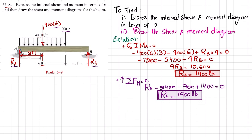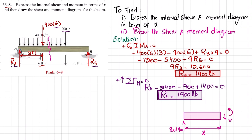Now we cut the beam at a distance x and draw the free body diagram. At the left end we have Ra = 1900 pounds. The cut is at distance x, giving a shear force and reaction moment at the cut face. There is a distributed load of 400 pounds per feet, which converts to a point load of 400x acting at a distance of x/2 from the cut. Call the cut point number one.